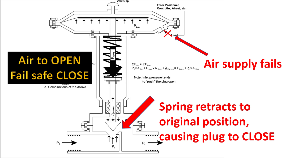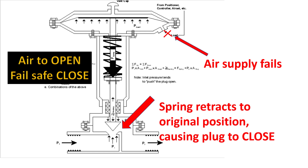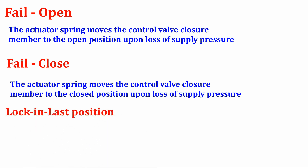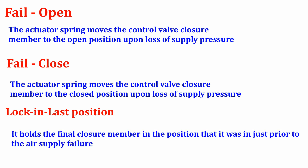Finally we have lock-in last position, which we shortly call LILP — that is, fail in place or stay put. In this mode, it holds the final closure member in the position it was just prior to the air supply failure. For example, if the control valve is maintained at 60% of valve opening and the air supply fails, the lock-in last position mode will remain at that same 60% open even during the supply failure.